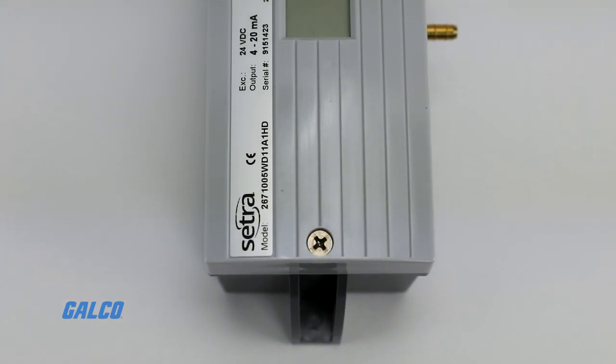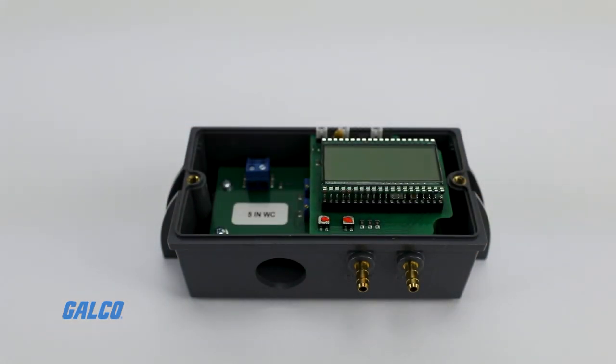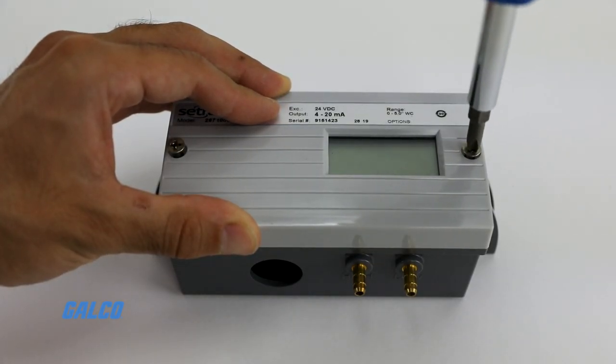The wall mount allows the sensor to be installed anywhere, whereas the duct probe structure is designed to maximize space efficiency in difficult applications.